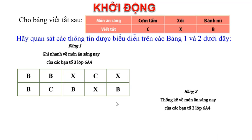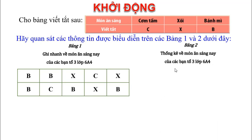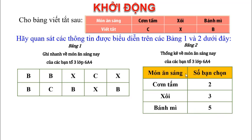Tiếp theo, cô có bảng thứ 2: bảng thống kê về món ăn sáng nay. Bảng gồm có 2 cột: cột thứ nhất là tên các món ăn, cột thứ 2 là số bạn chọn. Ứng với món cơm tấm, số bạn chọn là 2; món xôi, số bạn chọn là 3; món bánh mì, số bạn chọn là 5.